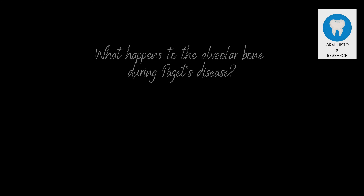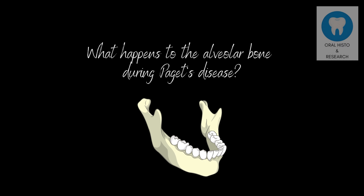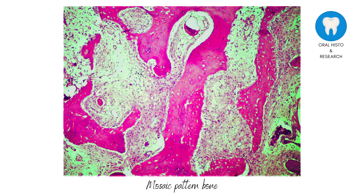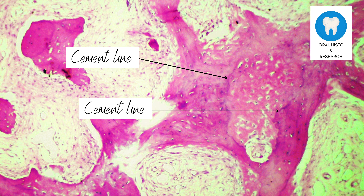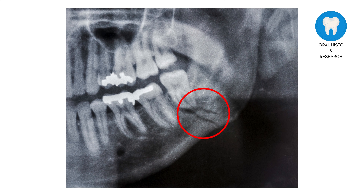But what happens to the alveolar bone during this disease? Alveolar bone can be equally affected. Histologically, the bone appears in a mosaic pattern. A closer look reveals that the bone contains thick cement lines that demarcate randomly-oriented lamellar bone. This unorganized bone cannot resist deformation and is increasingly vulnerable to fractures.